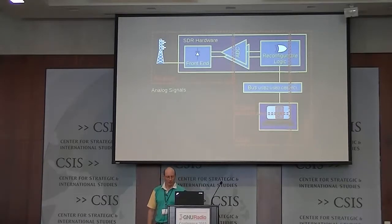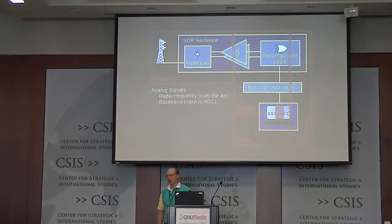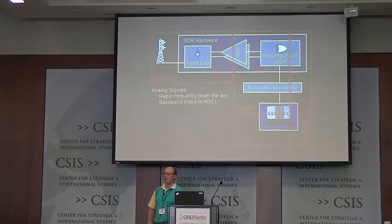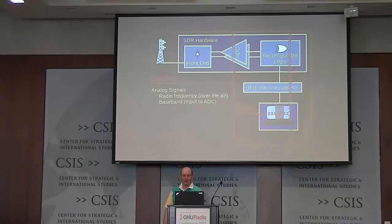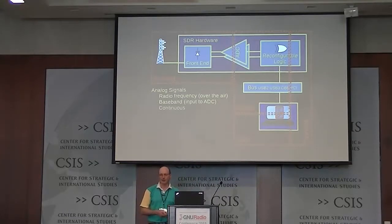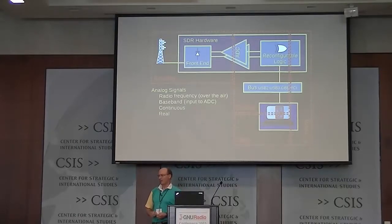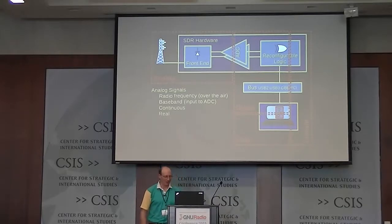Analog signals can be radio frequency over the air, or they can be baseband, which is typically what we put into the analog-to-digital converter. The ADCs are almost getting to the point where we can put the radio frequency directly in and just convert. So some of the ideas we have with down-conversion don't necessarily hold in the future, but for right now they do for the most part. Analog signals are continuous — if you measure them, say it's a voltage at a unit of time, you'll get an answer. And they're real — there are no complex signals over the air.